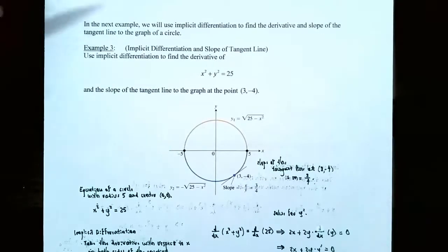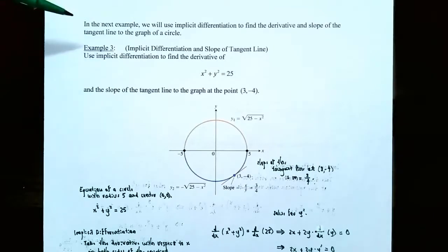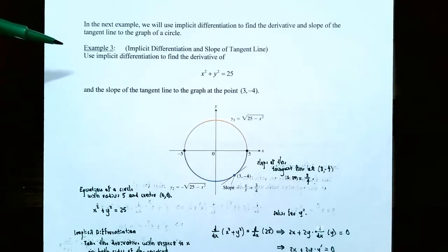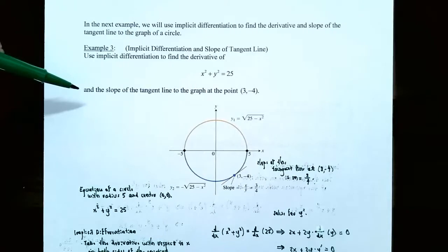In the next example, we're going to use implicit differentiation to find the derivative and the slope of the tangent line to the graph of a circle. Example 3: implicit differentiation and slope of a tangent line. Use implicit differentiation to find the derivative of x squared plus y squared equals 25, and then find the slope of the tangent line to the graph at the point 3, negative 4.